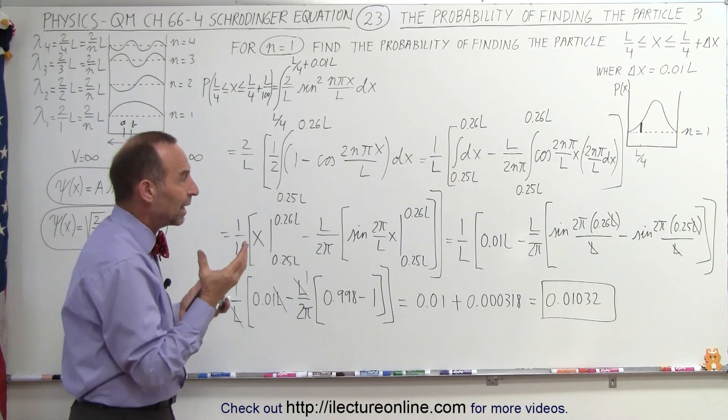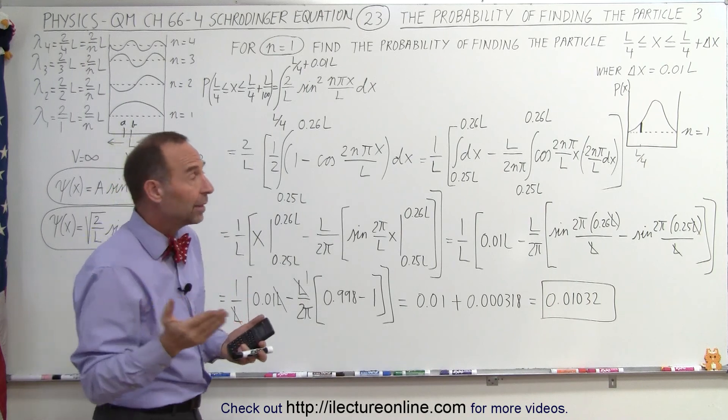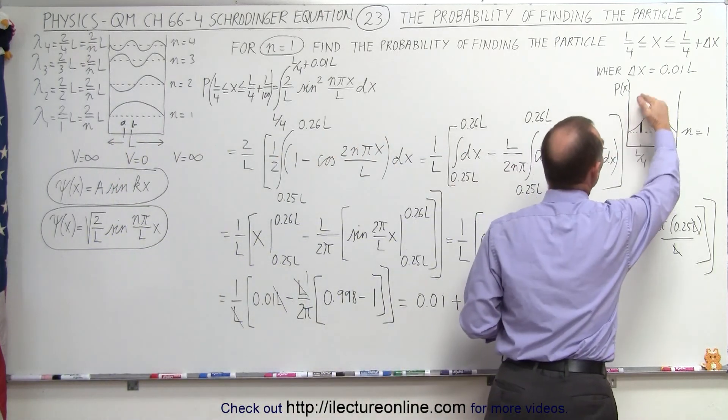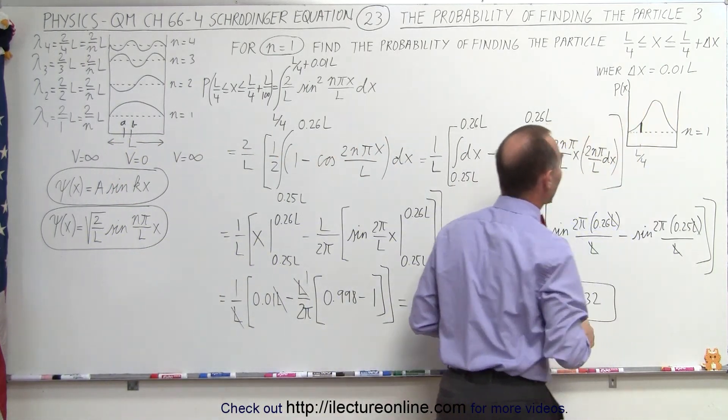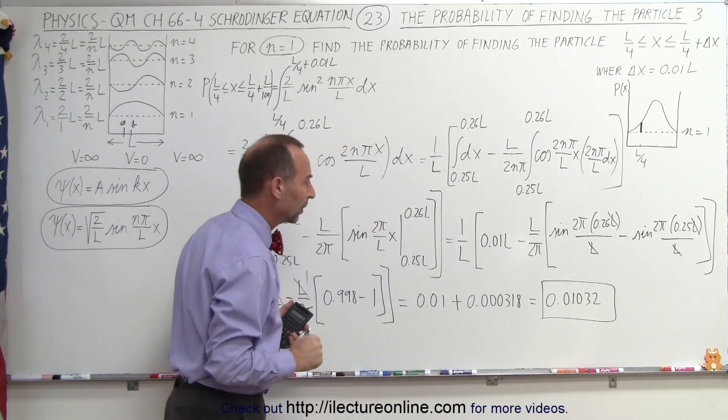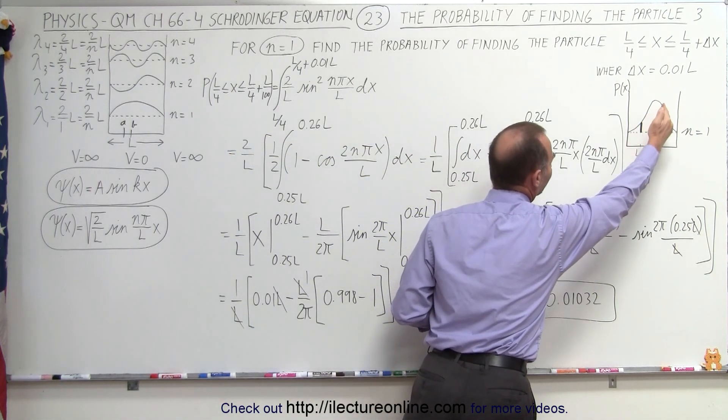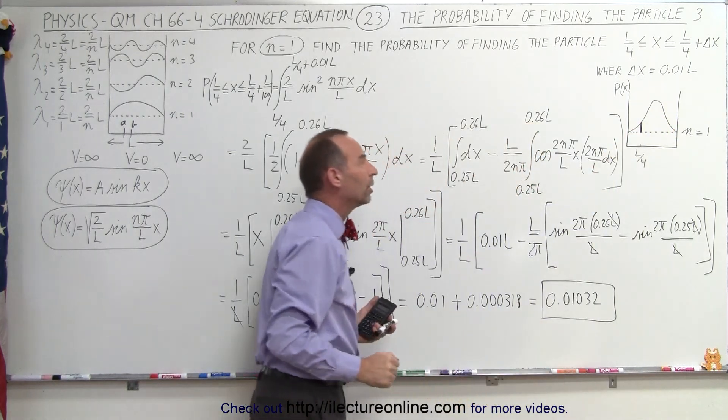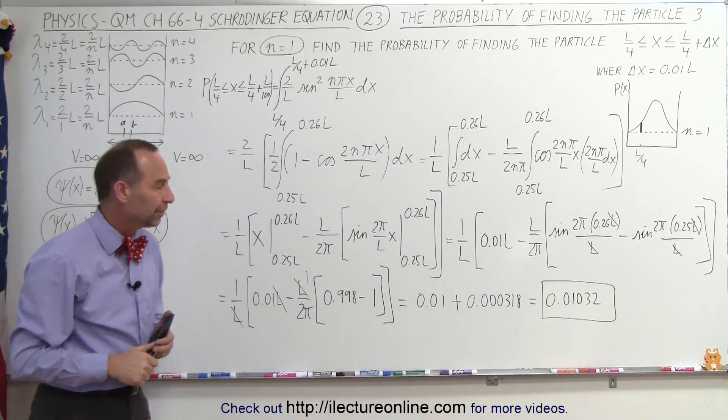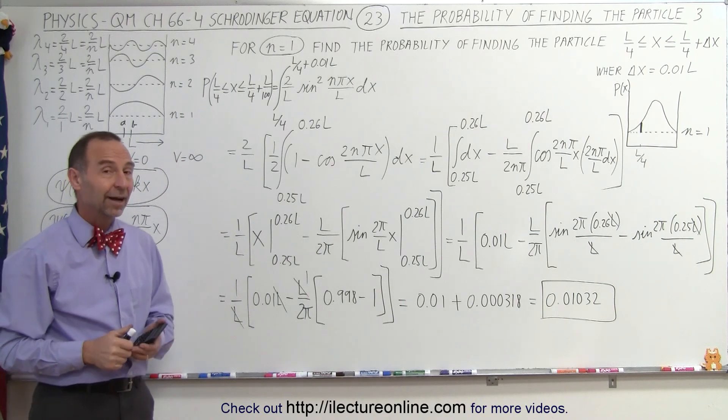So what we can do here is we can actually find a way to find the probability of finding the particle anywhere along this particular path in that small little region. So about 1% chance to find a particle there, and of course we can find that for any particular point along the path of that particle. And that's how that's done.